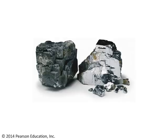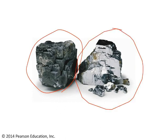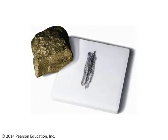More reliable than color is luster. Here's an example of that. This is the mineral galena. You can see a tarnished example of galena on the left, and a relatively fresh specimen of galena on the right. Galena has a metallic luster, meaning that it reflects light like a metal. So that's more reliable than color as an indicator of which mineral you're looking at.